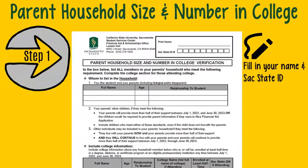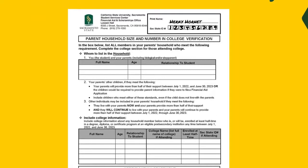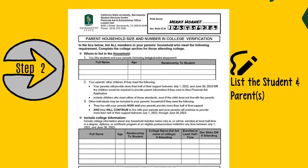Step 1: Complete your name and Sac State ID on the upper right-hand side of the form. Step 2: Fill the top table with you, the student, and your parent. Include biological parent and or stepparent. Make sure for each household member to state full name, age, and relationship to you, the student.